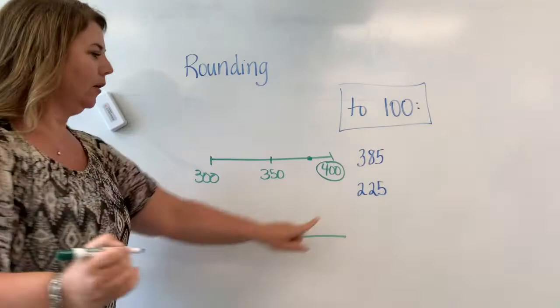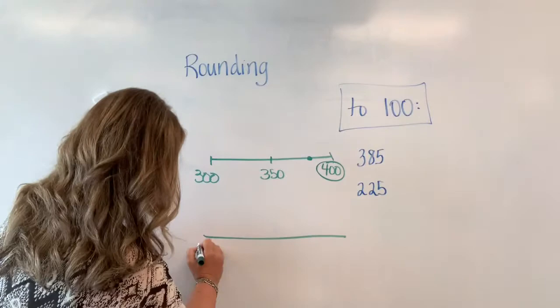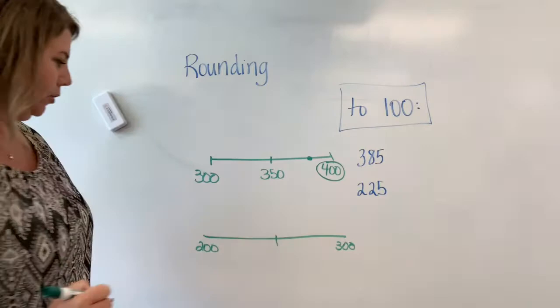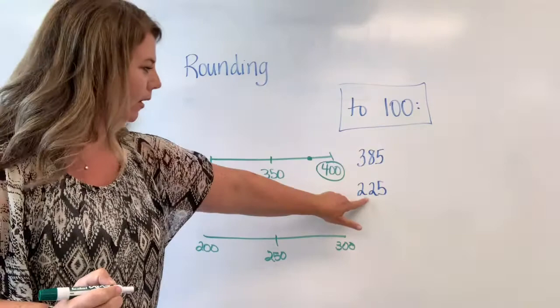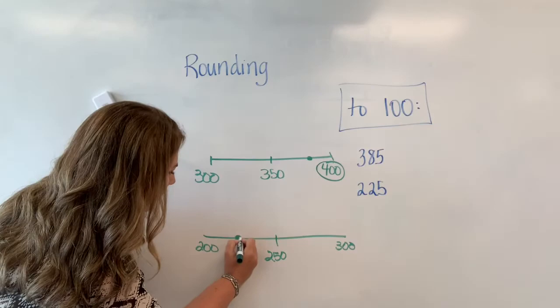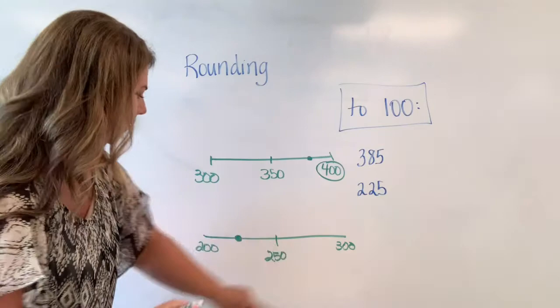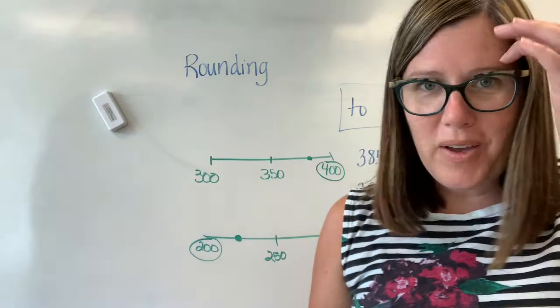We'll do one more. 225. She gave me one. 200. 300. Halfway between is 250. Where would I find 225? Right in here. And so then I'd say is 225 closest to 200 or 300? And we'd say it's closest to 200.